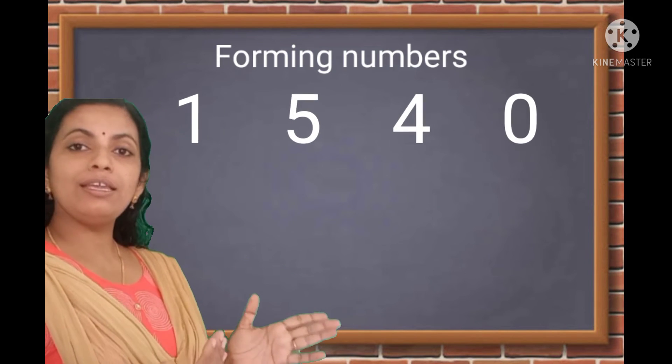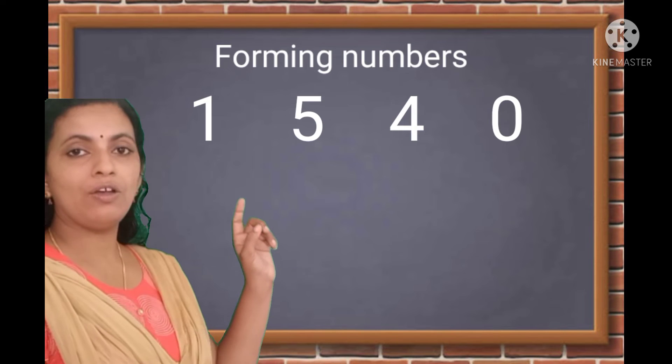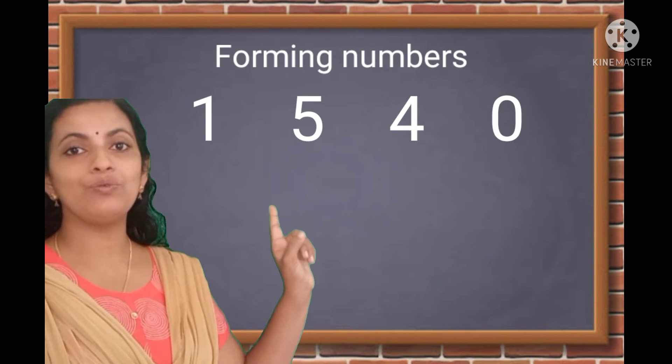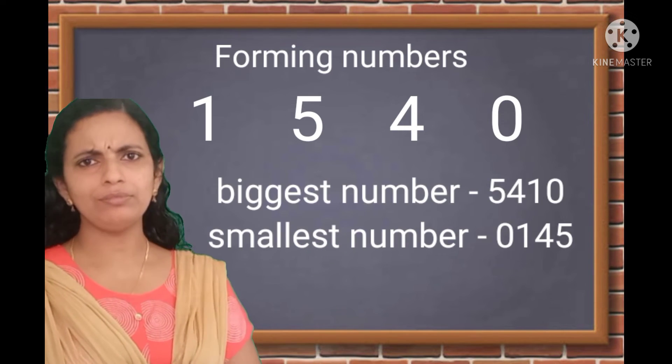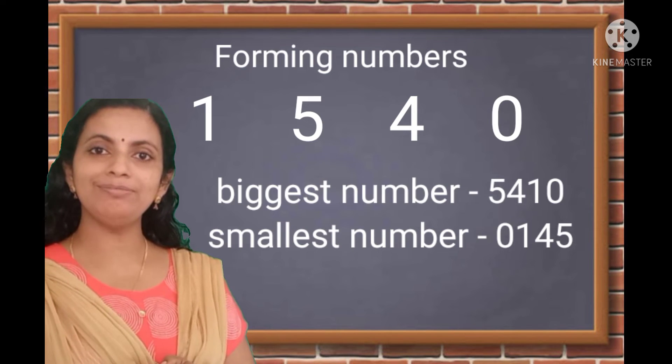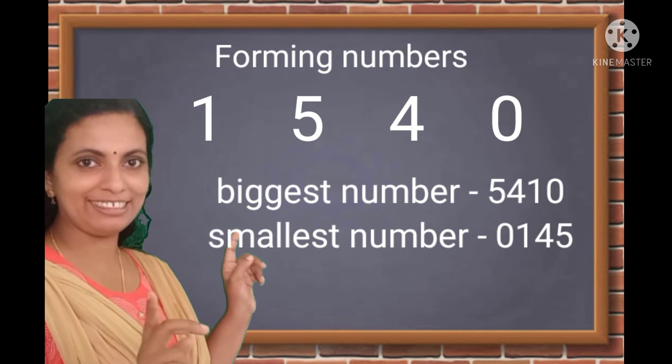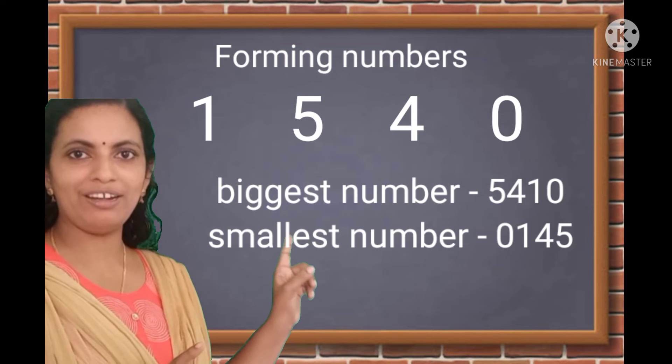Now, see another set of digits: 1, 5, 4, 0. Can you find the biggest number? Yes. Correct. 5410.